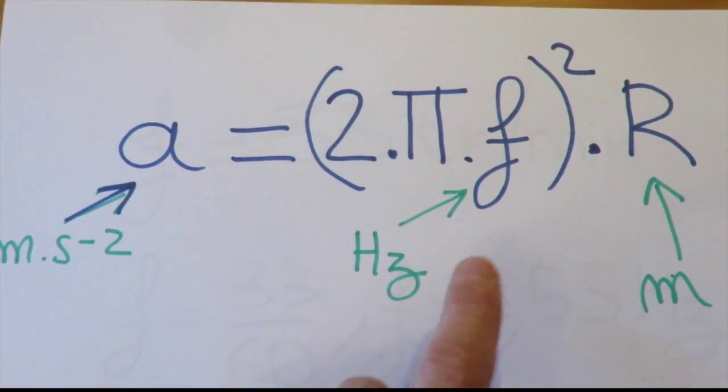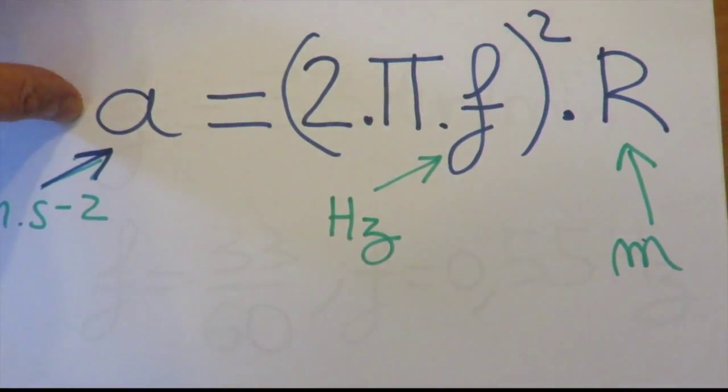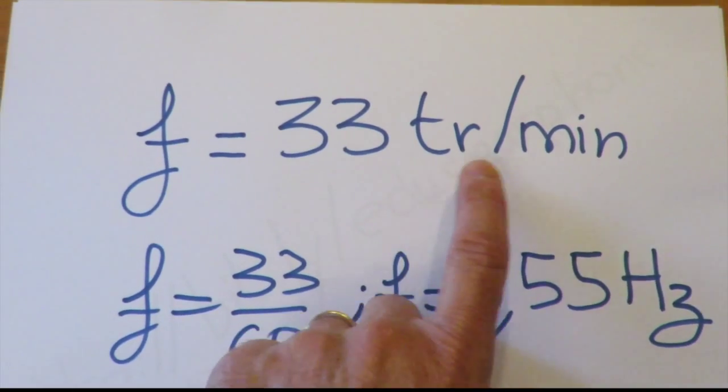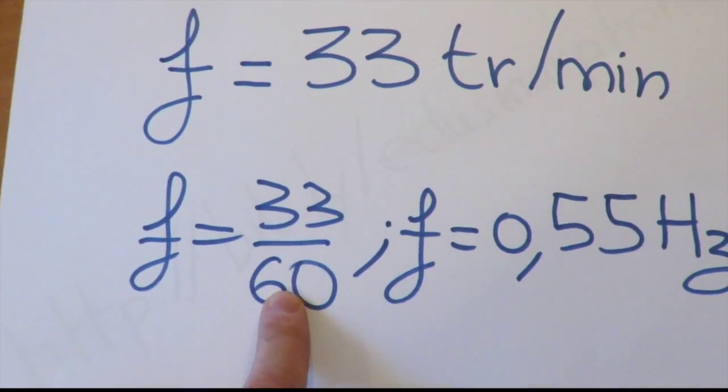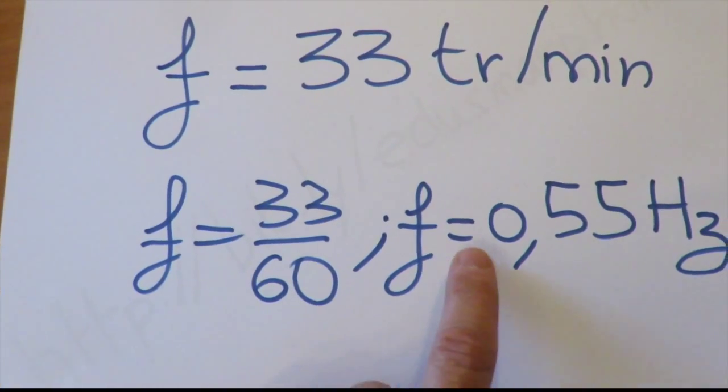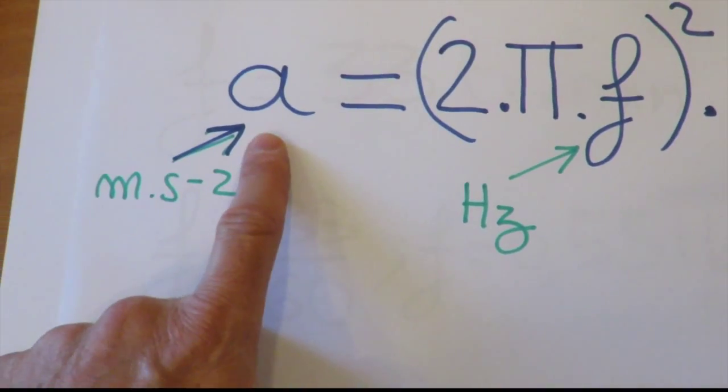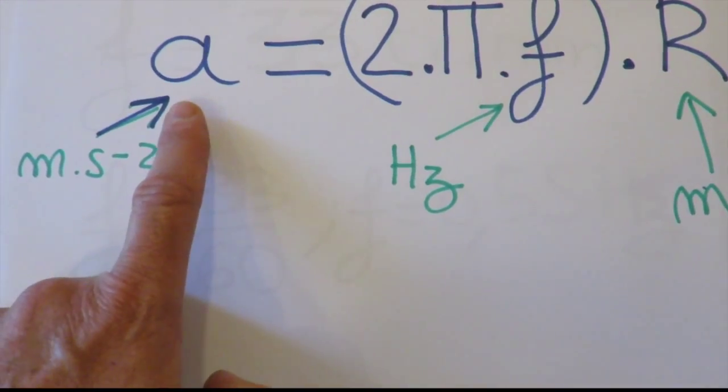We know F, because F is the speed of rotation of the smartphone, it's 33 turns per minute, so if you divide by 60, you have F is 0.55 Hertz. And we will measure A with the smartphone, and I will show you that now.